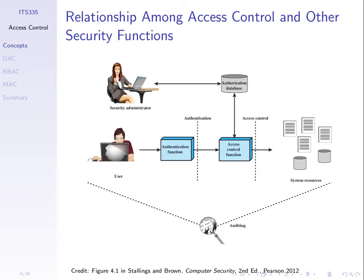With respect to what we've seen in authentication, access control is another function in our computer system. We have a set of resources — files, databases, memory — and to control which users can access them, we first need authentication of the user: checking that this person is authentic, already registered, and is who they say they are. Once a user is authenticated and logs in, we have an access control function to say what this user can do with respect to our resources.